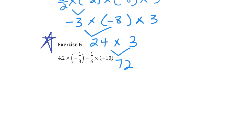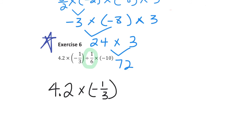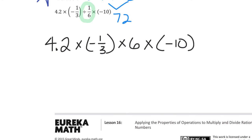Moving on to exercise 6. I have one division sign, so when I rewrite division as multiplication I need the reciprocal of 1/6. I have 4 and 2 tenths times negative 1/3 times — changing division to multiplication — the reciprocal of 1/6 is 6, times negative 10. Now looking at these numbers, I'll apply my properties and switch up the order.